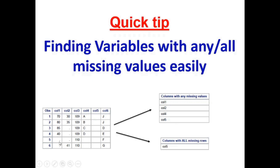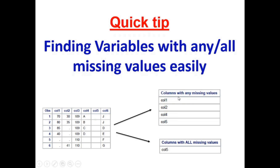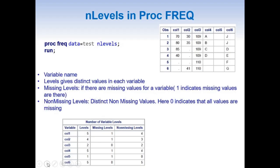Here we have a dataset in which we have variables with some missing values or all missing values. The goal is to build two simple reports: one showing columns with any missing values, and another showing columns with all missing values. In the case of col5, it has all missing values, whereas some of the other columns have some missing values.